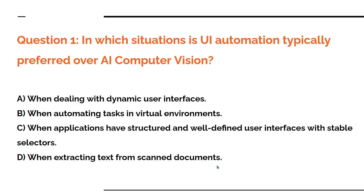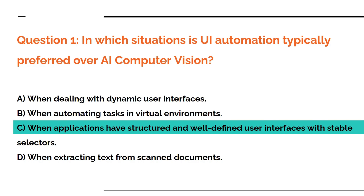I want you to pause this video and comment your answer. Simply write Question 1 or Q1 and whatever your answer is. Doesn't matter if you're going right or wrong, please do comment so that it becomes quite interesting to see people participating in the questions I've framed. The answer is C — when applications have structured and well-defined user interfaces with stable selectors, we have to go for UI automation.